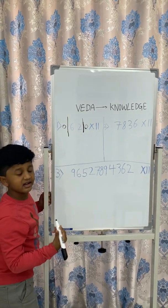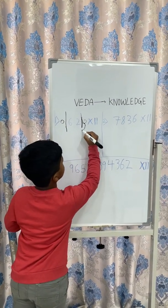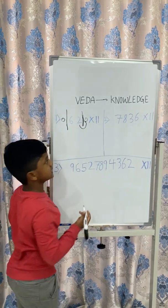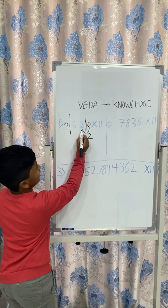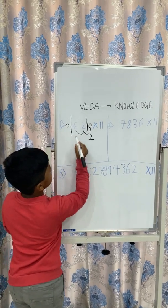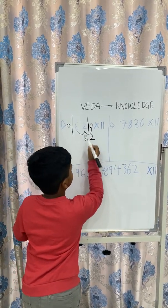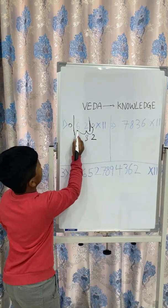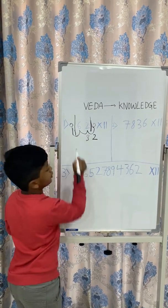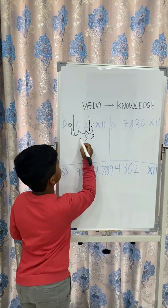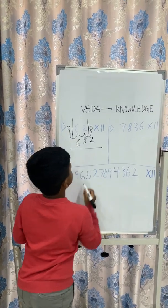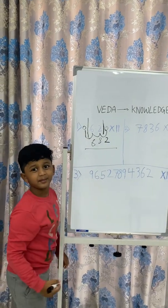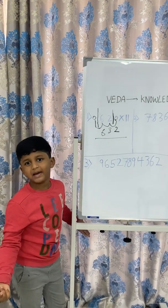Then you will add 0 plus 2 which gives you 2. Then you add 2 plus 6 which gives you 8. Then you add 6 plus 0 which gives you 6, and your answer is 682. See, it is so simple.